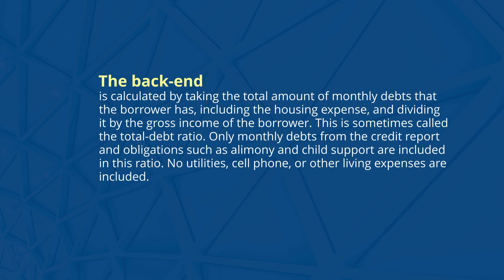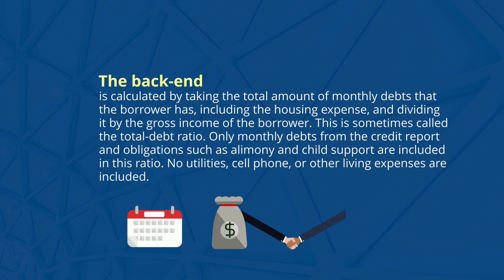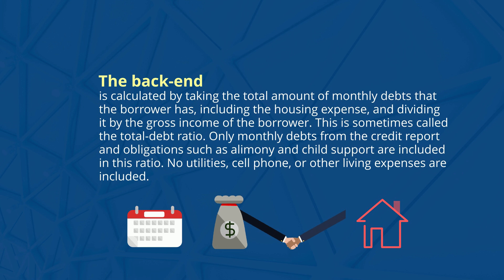The back-end is calculated by taking the total amount of monthly debts that the borrower has, including the housing expense, and dividing it by the gross income of the borrower. This is sometimes called the total debt ratio. Only monthly debts from the credit report and obligations such as alimony and child support are included in this ratio. No utilities, cell phone, or other living expenses are included.